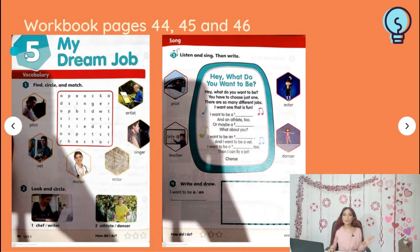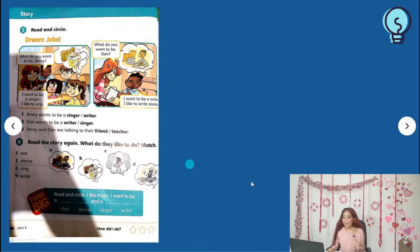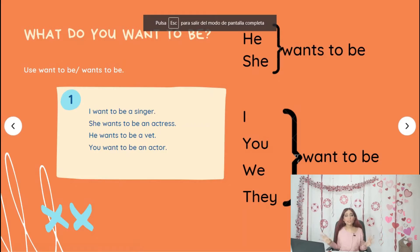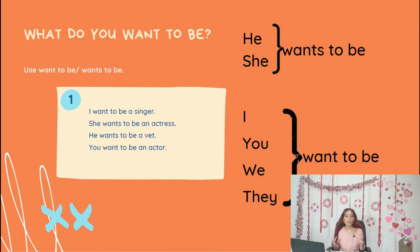These activities were about the vocabulary. Also, we have activity 46 and that's it. So today, we are going to do a review about 'want to be' or 'wants to be.' This is something that I already explained to you, but I want to make sure that you have understood this topic.